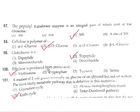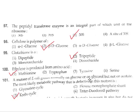Question 100: Ethylene is produced from the amino acid methionine. So the correct answer is option 1. Question 101: A mutant of E. coli grows normally on glucose or glycerol but not on acetate. The most likely defective metabolic pathway is glycolysis is normal, but the citric acid cycle (Krebs cycle) is not working. So the correct answer is option 3.